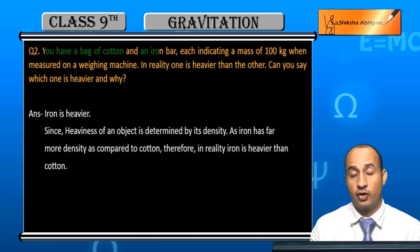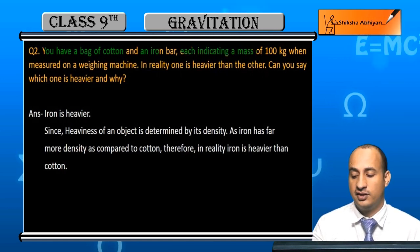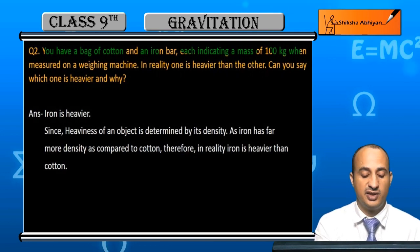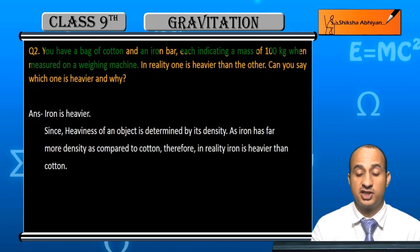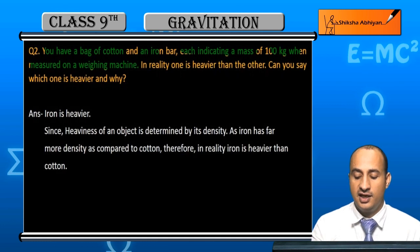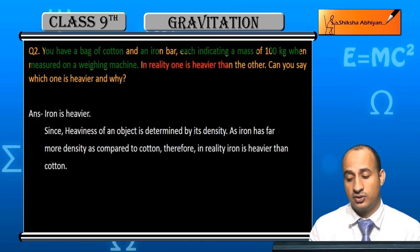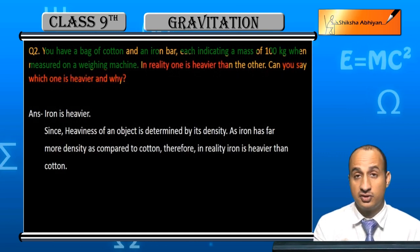You have a bag of cotton and an iron bar, each with a mass of 100 kg. Both indicate 100 kg when measured on the weighing machine, but in reality one is heavier than the other. Can you say which one is heavier?